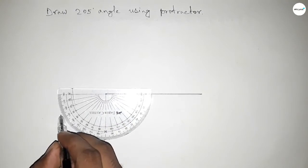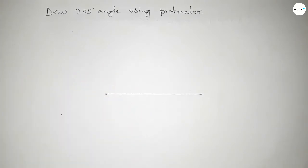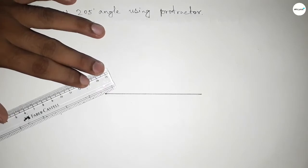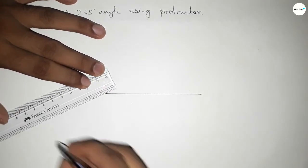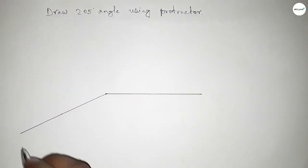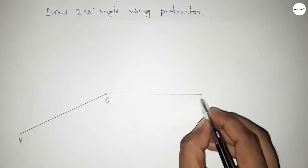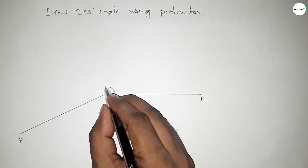By adding 25 degree angle with 180 degree, then we can get 205 degree angle. Now joining this line to get 205 degree angle. So this is 205 degree angle.